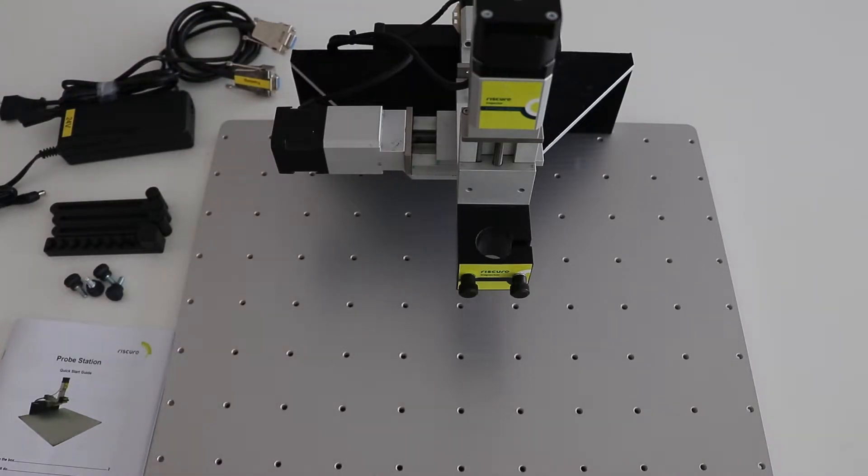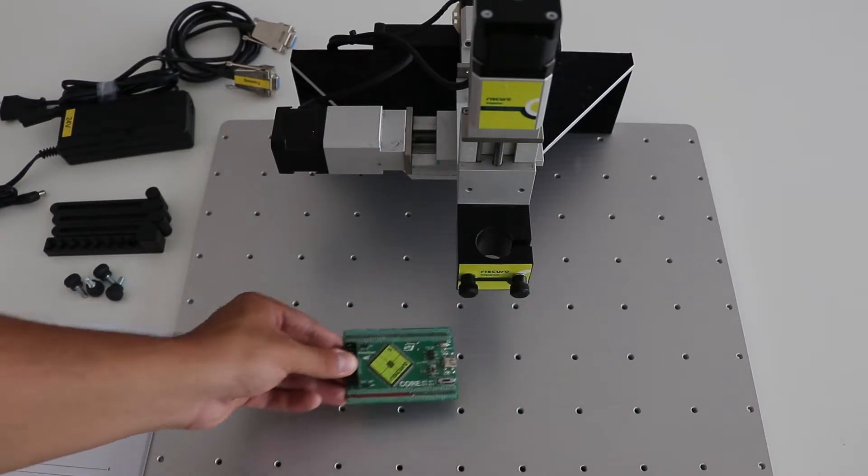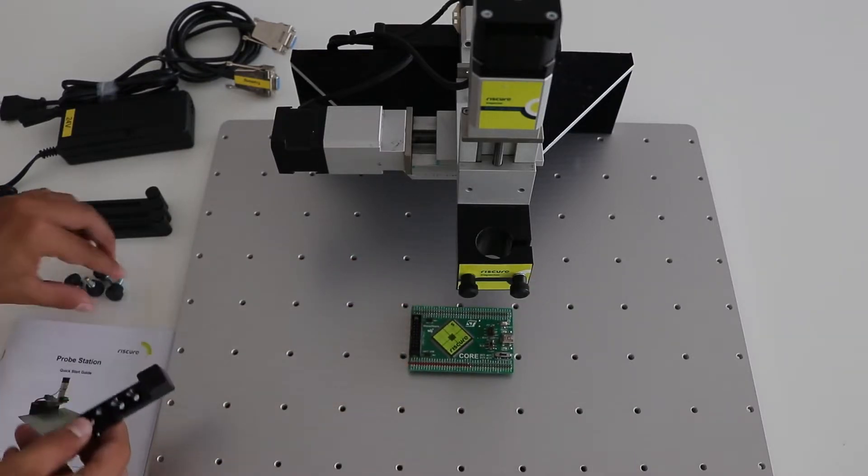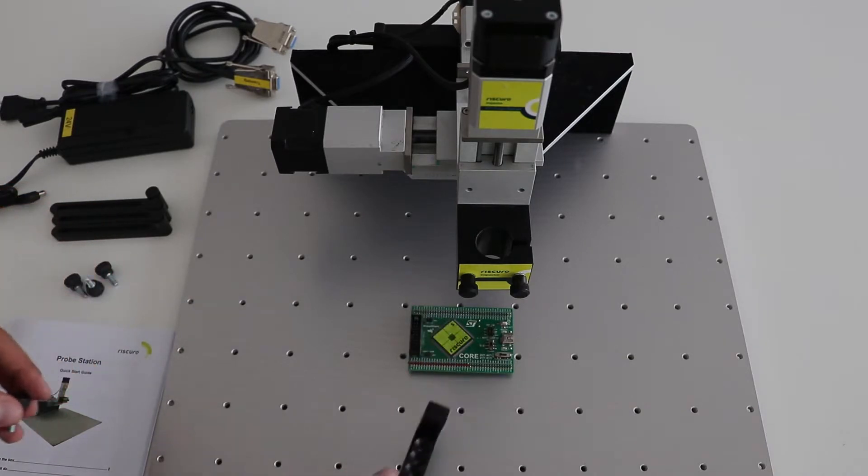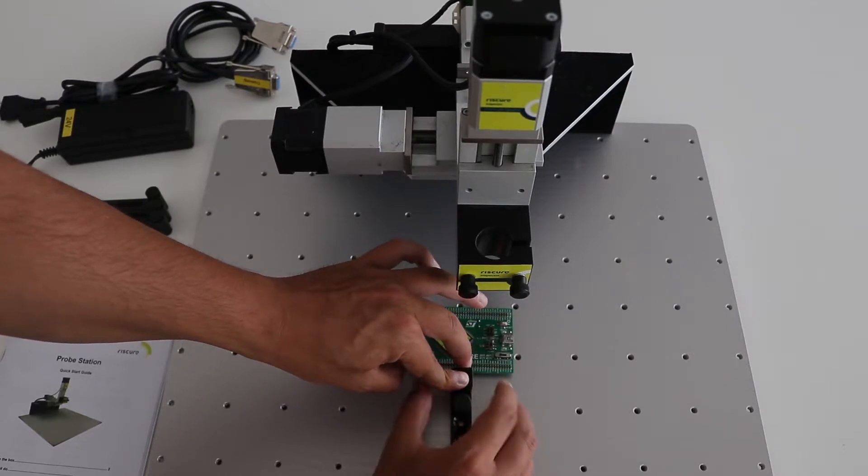So let's say that we have a target and we want to perform a measurement using an EM probe and the probe station. We choose a position in the plate just under the probe clamp and use the brackets to make its position fixed and steady.